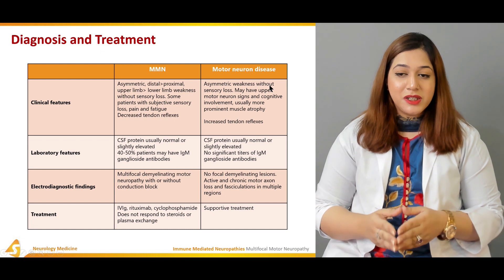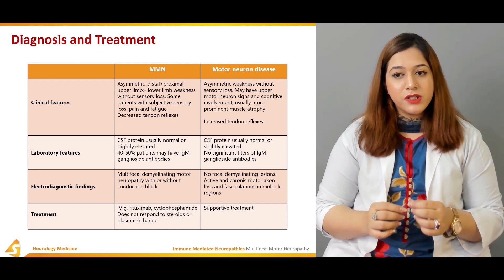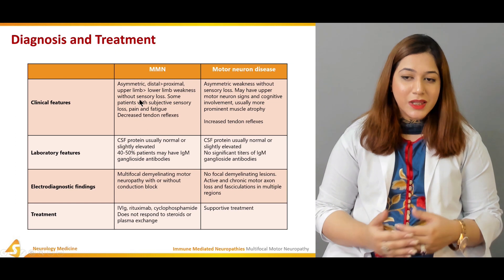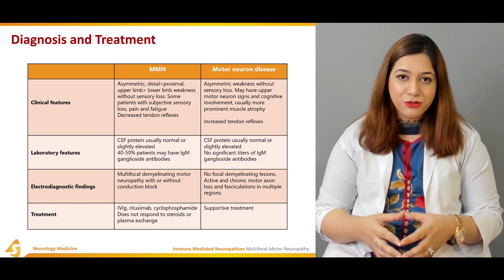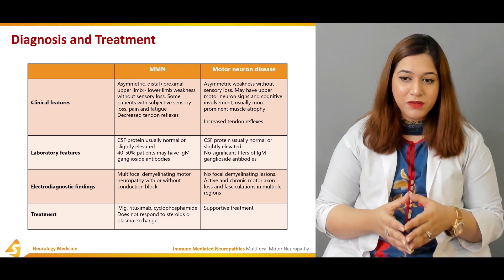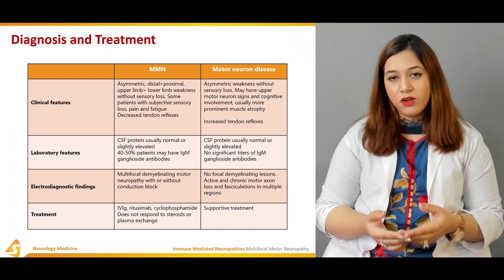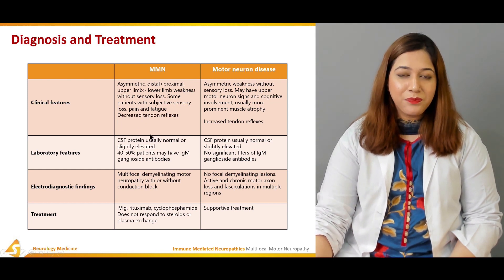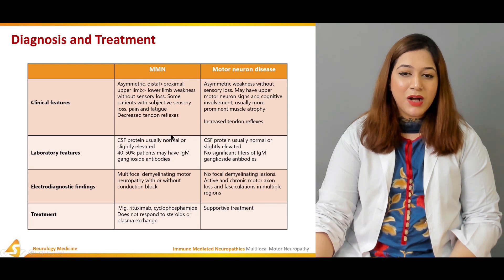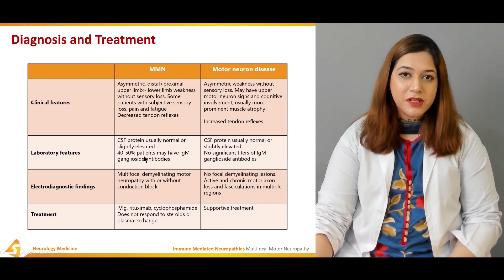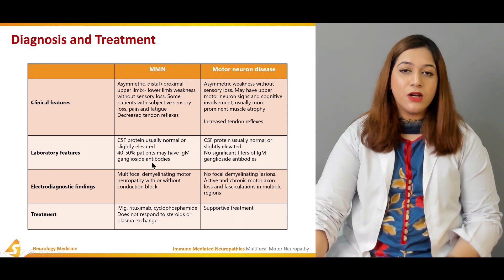Multifocal motor neuropathy is difficult to distinguish from motor neuron disease because both present with asymmetric, distal, progressive weakness without numbness. Features that distinguish MMN include: it predominantly affects the upper limbs but not exclusively; there is no respiratory or bulbar involvement; it does not present with upper motor neuron signs; cramps and fasciculations are found in more than 50% of patients; and it has a characteristic electrophysiological pattern that is the hallmark of its diagnosis.